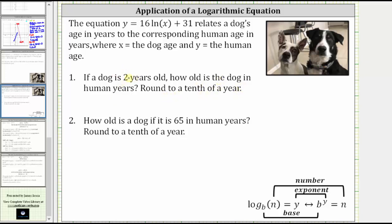So here we are given x, the dog age. We want to find y, the corresponding human age, where y is equal to 16 times natural log of x. In our case x is two, so we have natural log two plus 31.